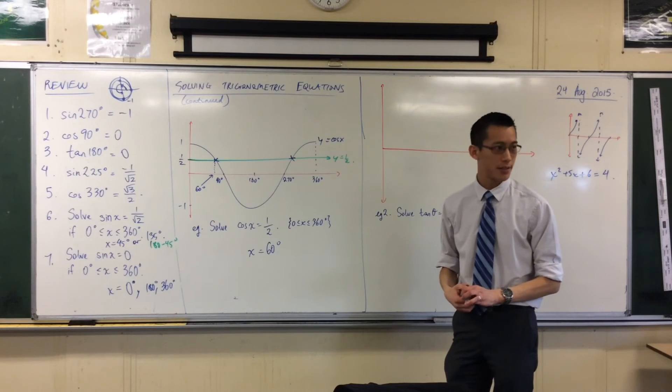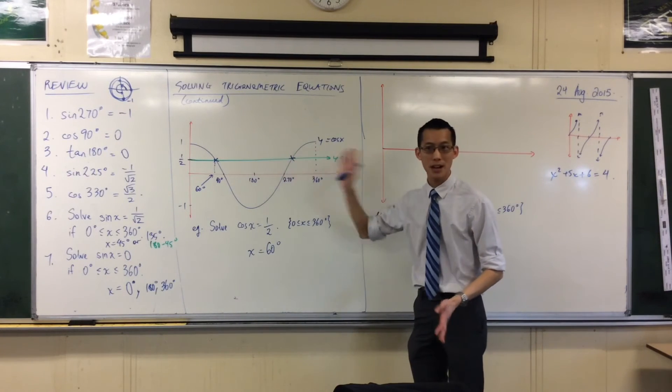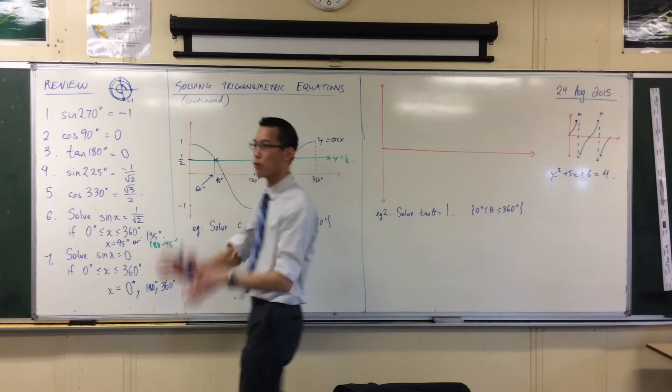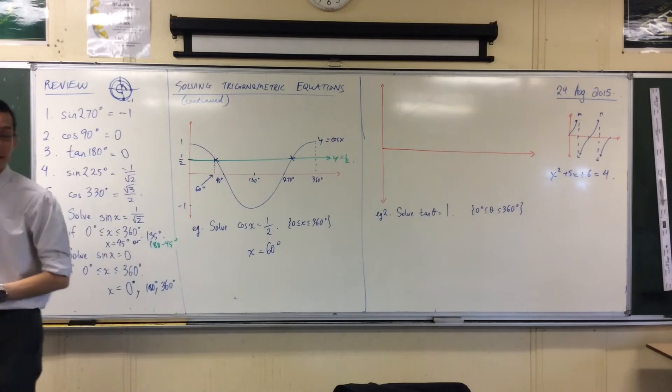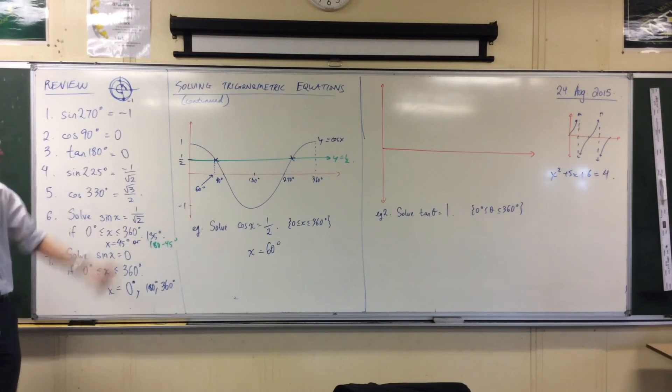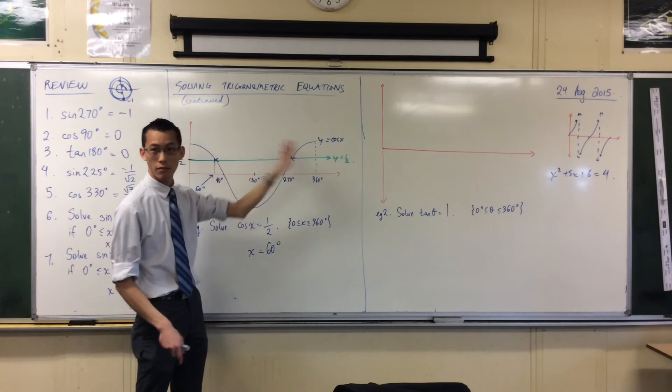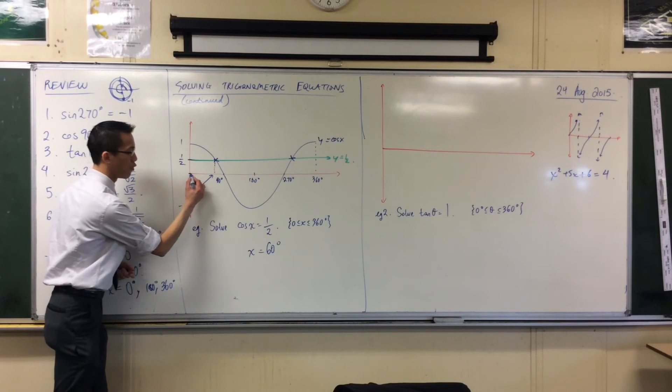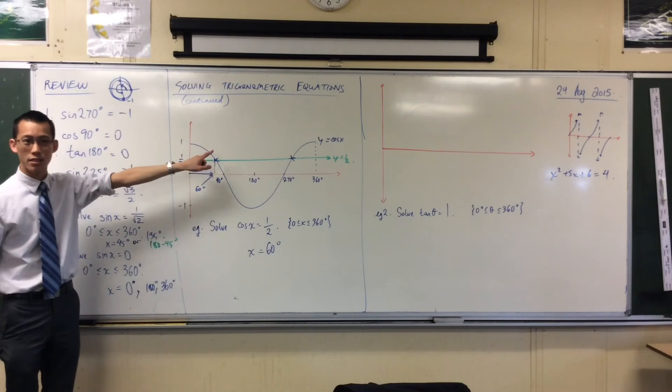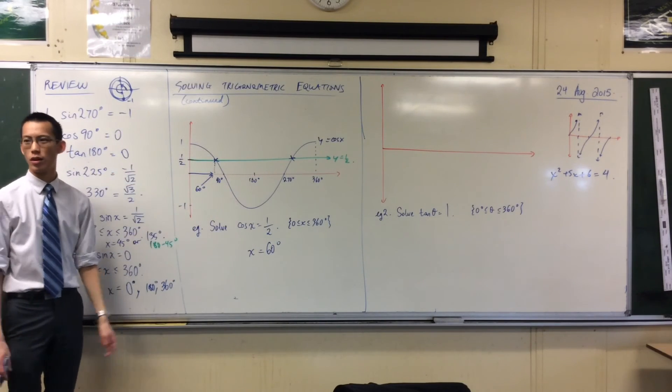But I have another solution. Now, remember, all these trigonometry graphs, they're symmetrical like crazy. There's symmetry everywhere. In fact, this shape that I've got right now, if I divide it right down the middle, it's just a reflection. So if I went forward 60 degrees to get this solution, how am I going to get the other one?